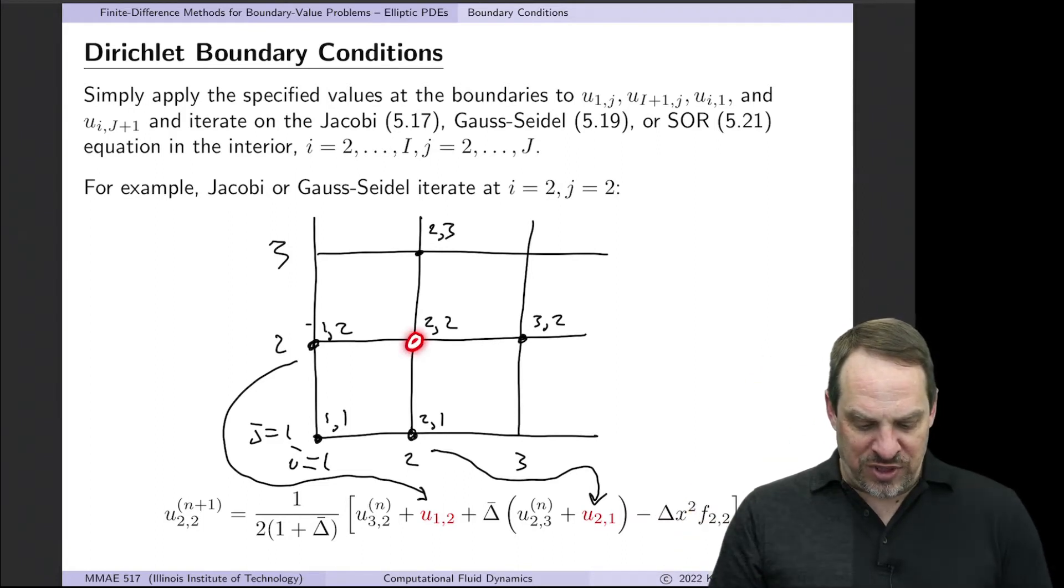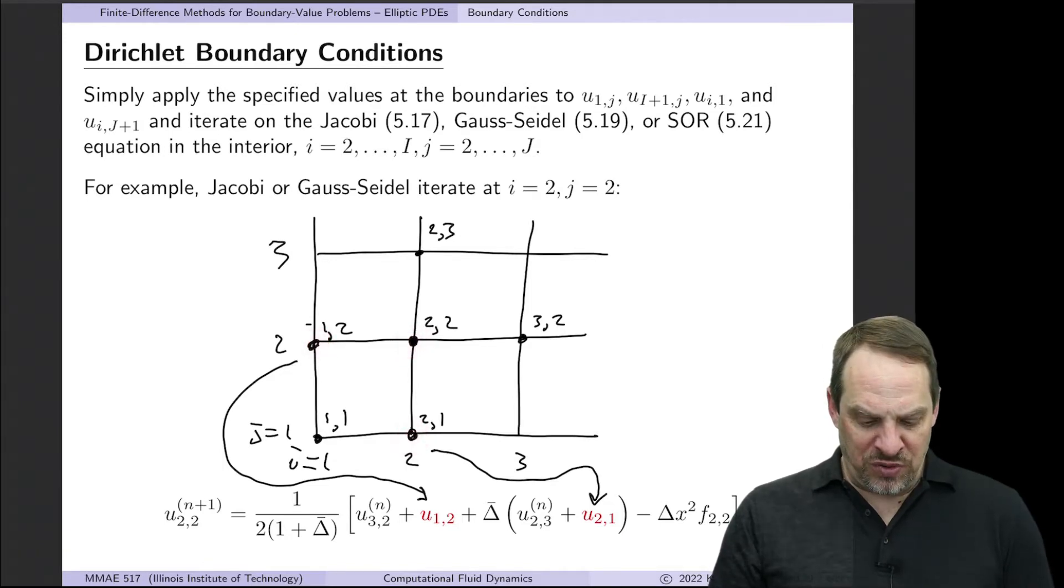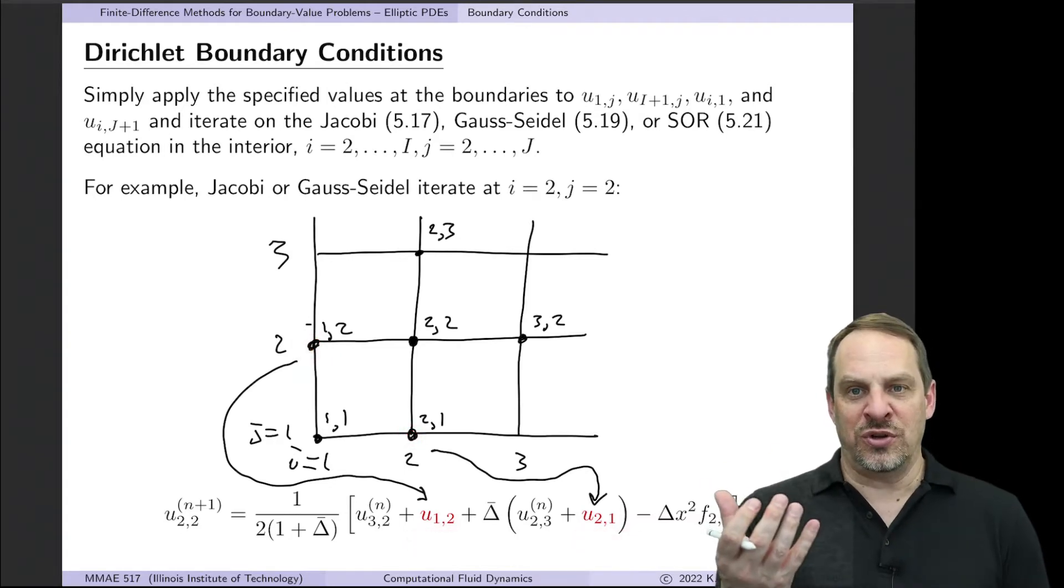So if you look, for example, at this point 2,2, when I is 2 and J is 2, you'll notice you have two points here and here that are on the boundary. So what happens? Well, you've already put in those boundary values into the array, and so on the right-hand side where you have those terms,